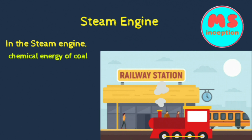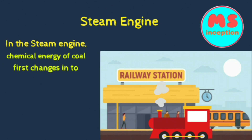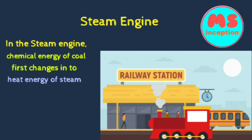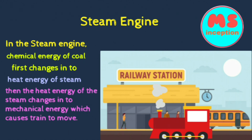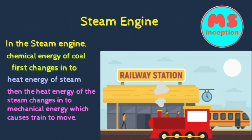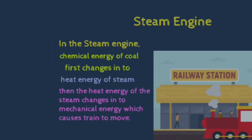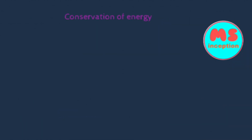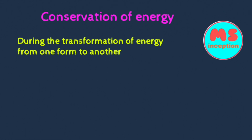In the steam engine, the chemical energy first converts into heat energy, then heat energy converts into mechanical energy.